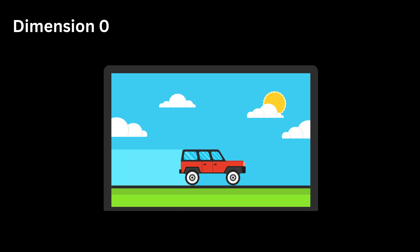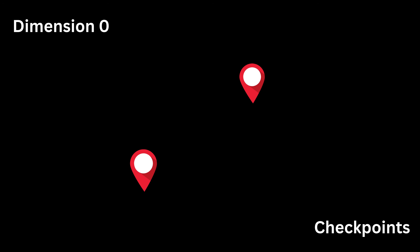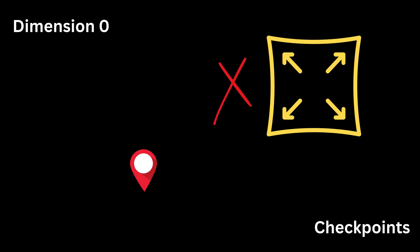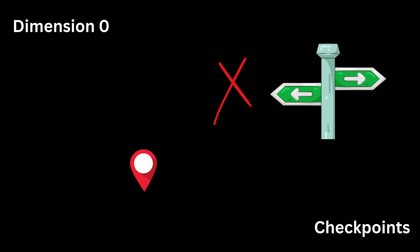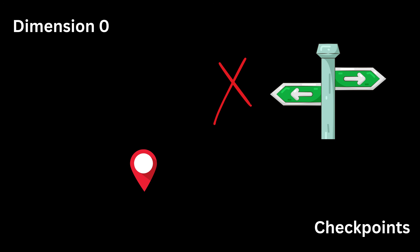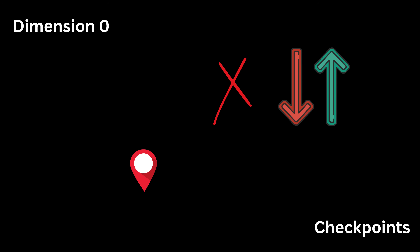Dimension Zero. Imagine you are inside a video game, and the very first thing you see is a tiny glowing checkpoint dot. It does not stretch, it does not move, it does not have a left or right or up or down. It just marks a location so the game knows where the player will spawn. Dimension Zero is just a location with no size. Physicists use it as a reference point to say where something is, not what shape it has.